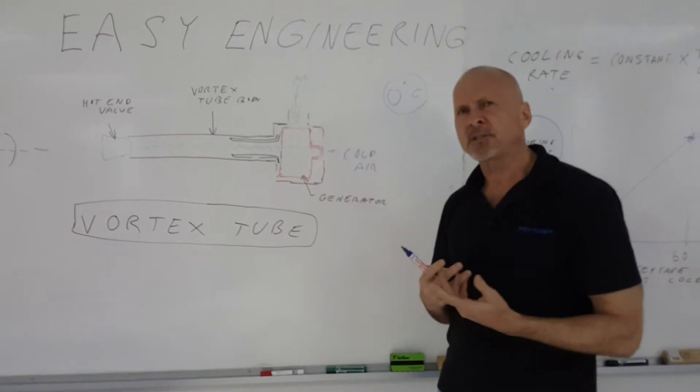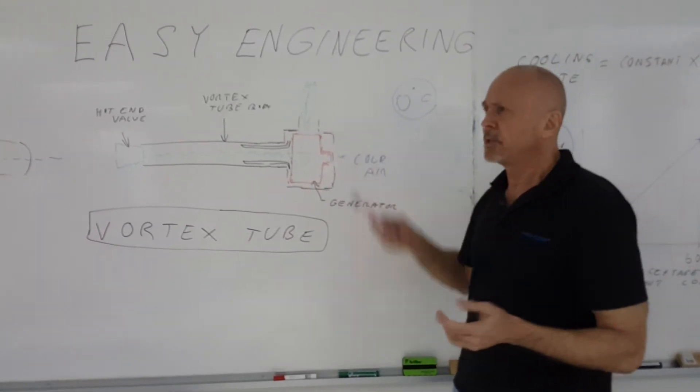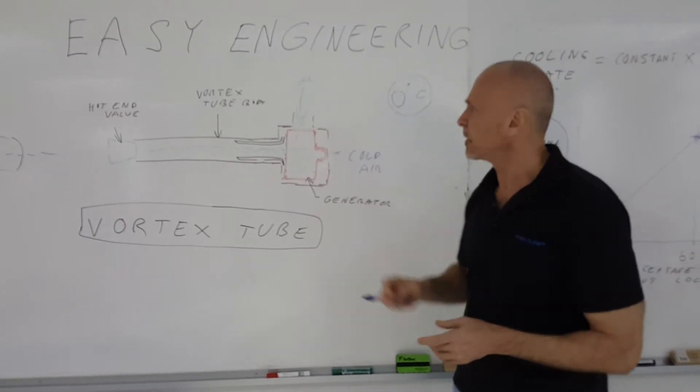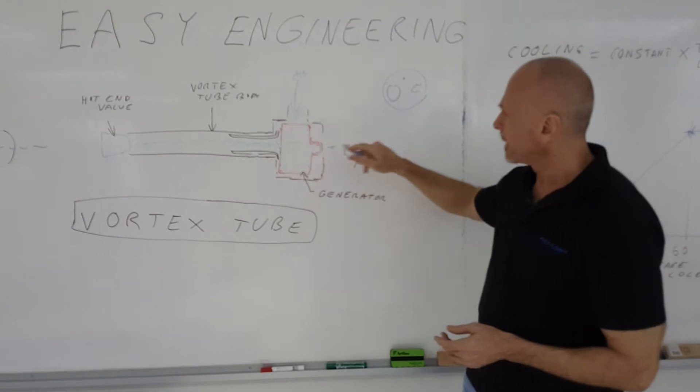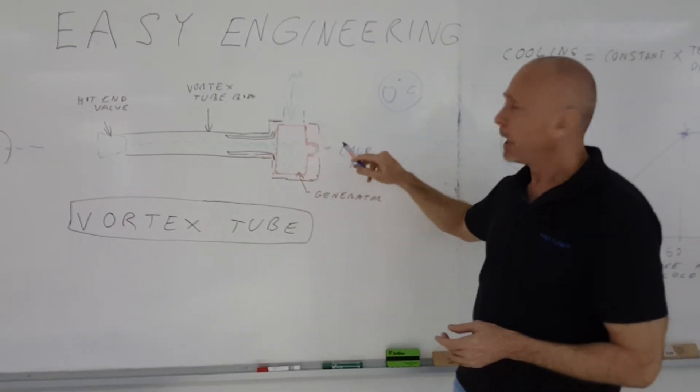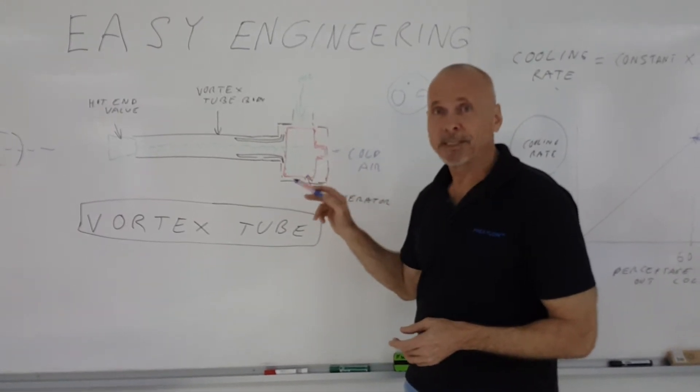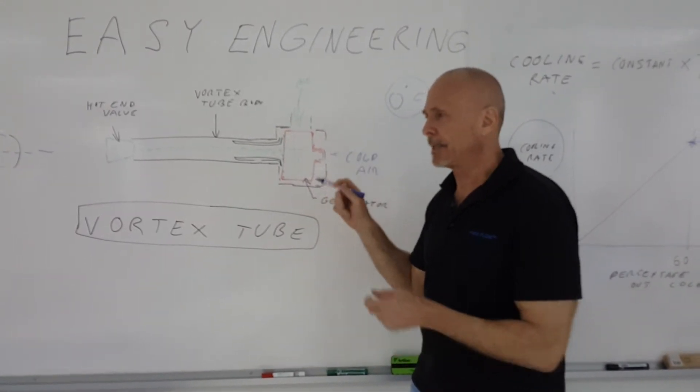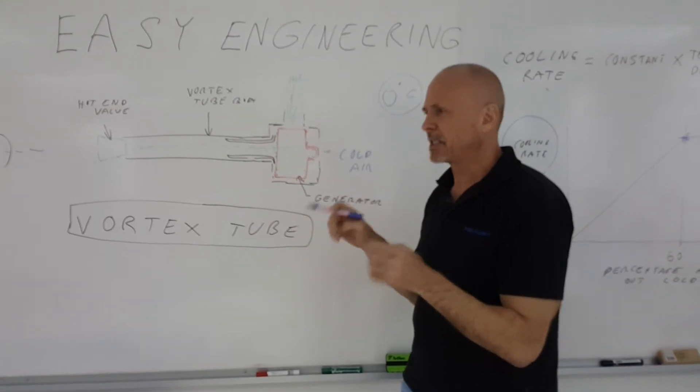But a lot of regular factory air only has a dew point of around zero, two or two degrees Celsius. So if you get below that temperature, that compressed air going at the cold end is going to start condensing water. You actually might get ice inside the vortex tube. And I've seen that happen. It's really quite interesting. It kind of goes like all of a sudden the vortex tube will stop because you've got an ice pond in there and then it spits out the ice.